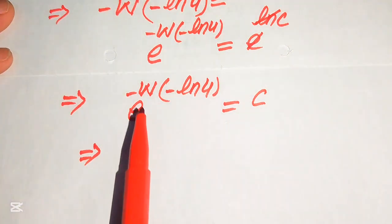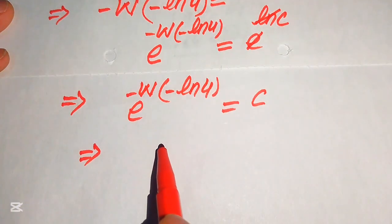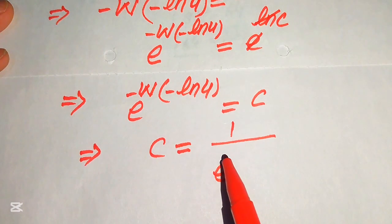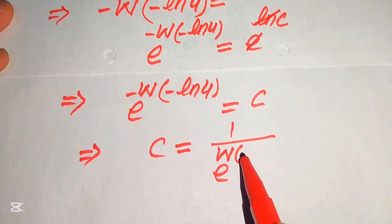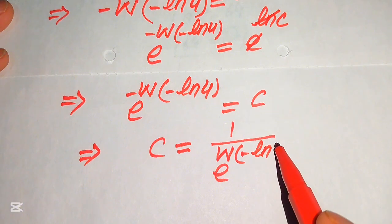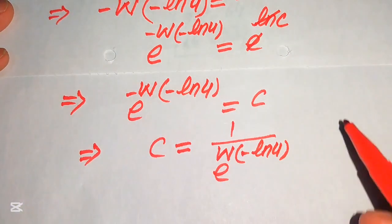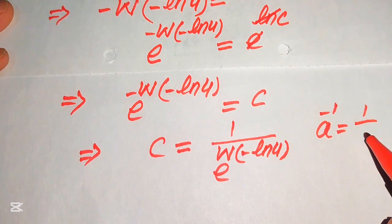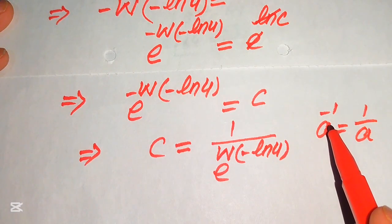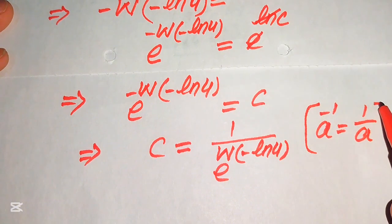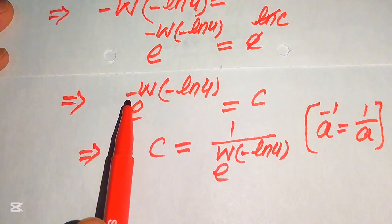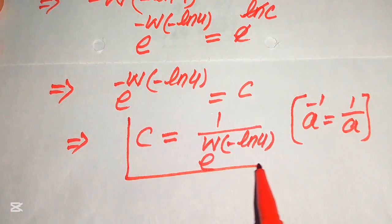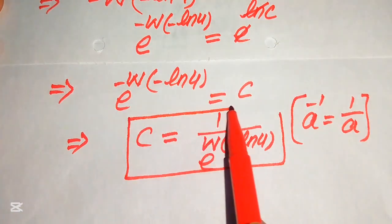Eliminating the negative sign, we write c is equals to 1 over e to the power of W of (minus log 4). When we move the term with the negative exponent to the denominator, the exponent becomes positive. So this is the final value of c in this problem.